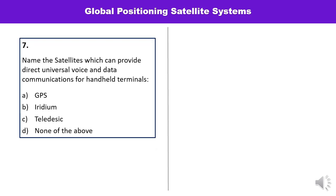Question number seven: Name the satellite which can provide direct universal voice and data communication for handheld terminals. The options are GPS, Iridium, Teledesic, and none of the above. Iridium is that satellite which provides direct universal voice and data communication, so B is the correct option.